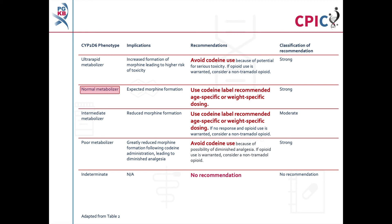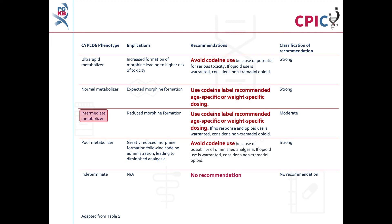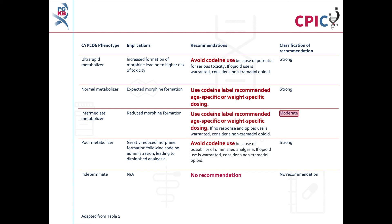Patients with a CYP2D6 normal metabolizer phenotype will have expected rates of morphine formation. These patients can be given codeine using the age or weight-specific dosing recommendations given on the label. This is a strong recommendation. Patients with a CYP2D6 intermediate metabolizer phenotype will have reduced morphine formation. These patients can be given codeine using the age or weight-specific dosing recommendations given on the label. If the patient does not respond to codeine and opioid use is warranted, consider a non-tramadol opioid. This is a moderate recommendation.